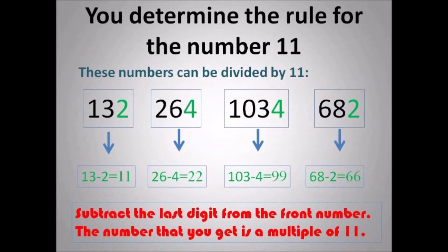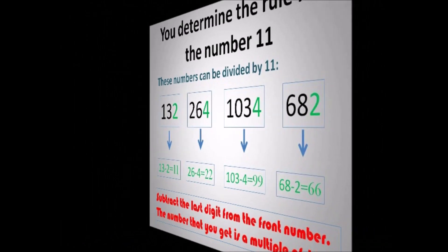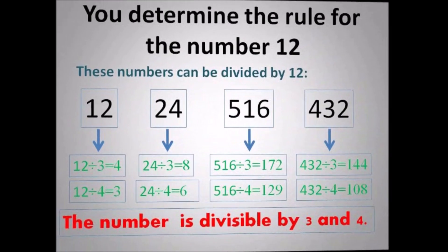For 11, subtract the last digit from the front number. And if the answer you get is a multiple of 11, then it's divisible by 11. So I subtracted 2 from 13 and got 11 — that's straightforward. Subtracted 4 from 26 and got 22 — that's divisible by 11. And so on.